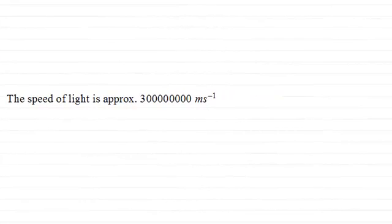Hi there. Now the speed of light is approximately 300 million metres per second. In fact it's a value just slightly less than this.